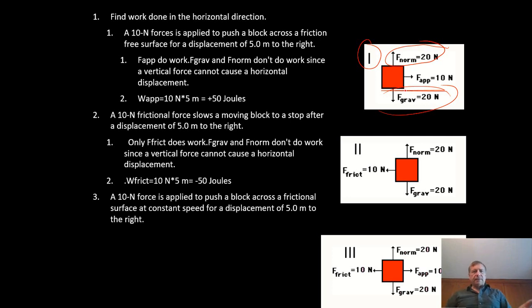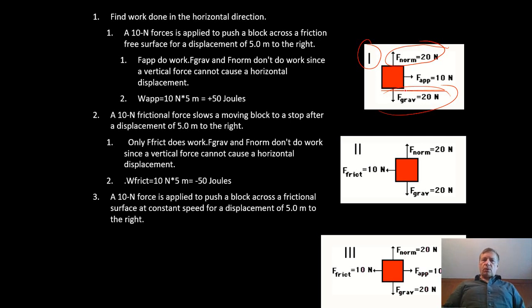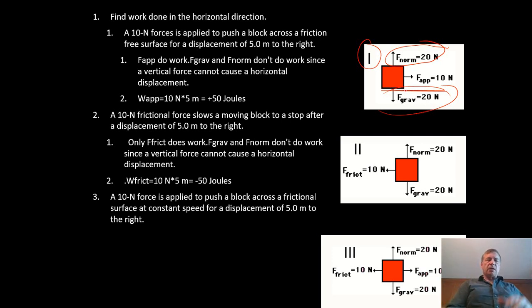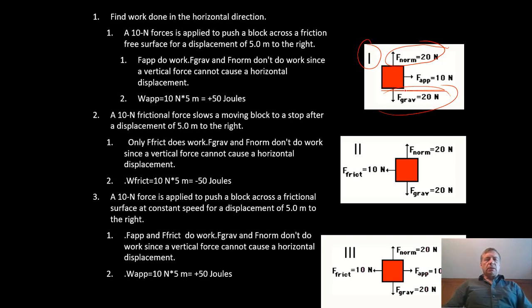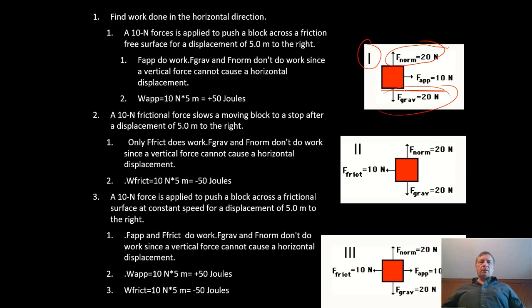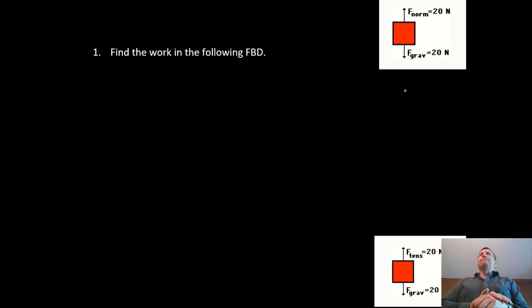Example three: the object moves 5 meters to the right. Gravity and normal do no work — there's no motion up or down. The applied force is to the right, so that gives positive 50 joules. Friction is to the left while the object moves right, giving negative 50 joules.